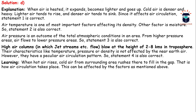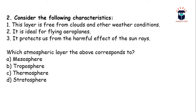Air pressure is an outcome of total atmospheric conditions in an area, and air flows from higher pressure areas to lower pressure areas — statement 3 is also correct. High air columns, i.e., jet streams, blow at a height of 2 to 8 kilometers in the troposphere. Their characteristics like temperature, pressure, or density are not affected by the near-earth surface, but they have a peculiar air circulation pattern due to blowing at high altitudes — statement 4 is also correct. The key learning: when hot air rises, cold air from the surrounding area rushes in to fill the gap — that is how air circulation takes place.